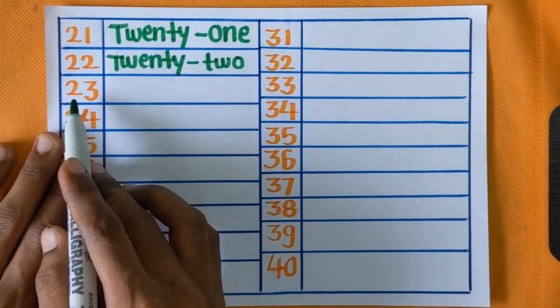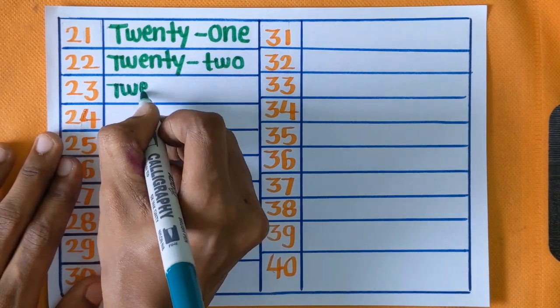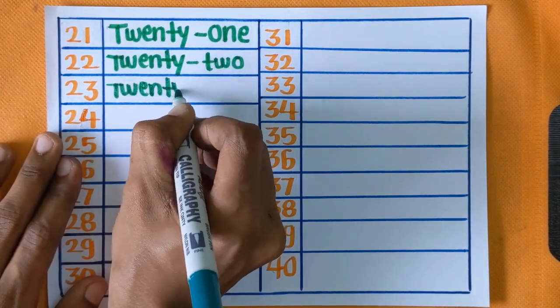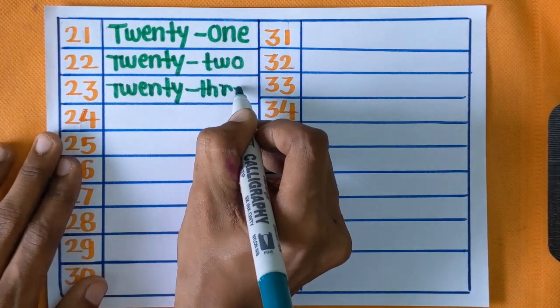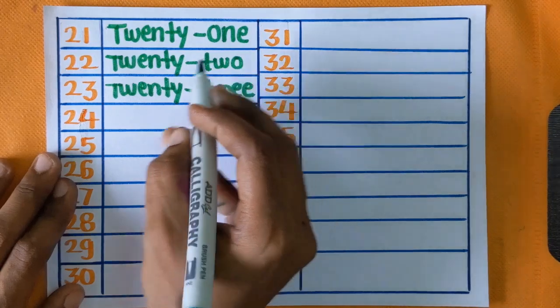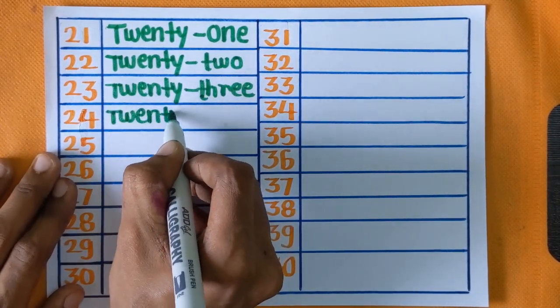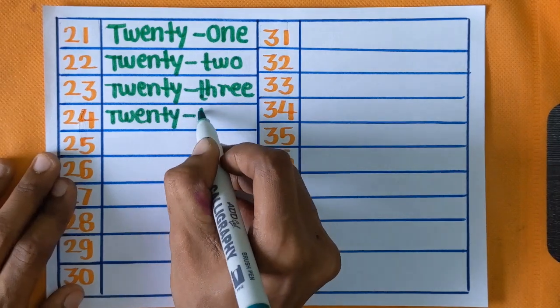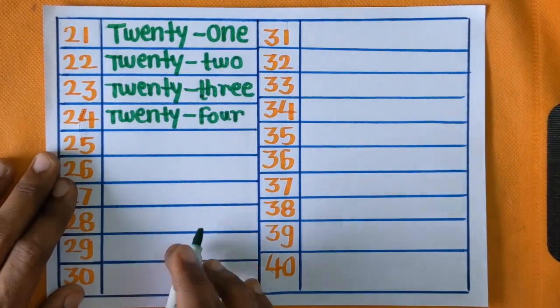Next is number twenty-three: T-W-E-N-T-Y, T-H-R-E-E, twenty-three. Next is number twenty-four: T-W-E-N-T-Y, F-O-U-R, twenty-four.